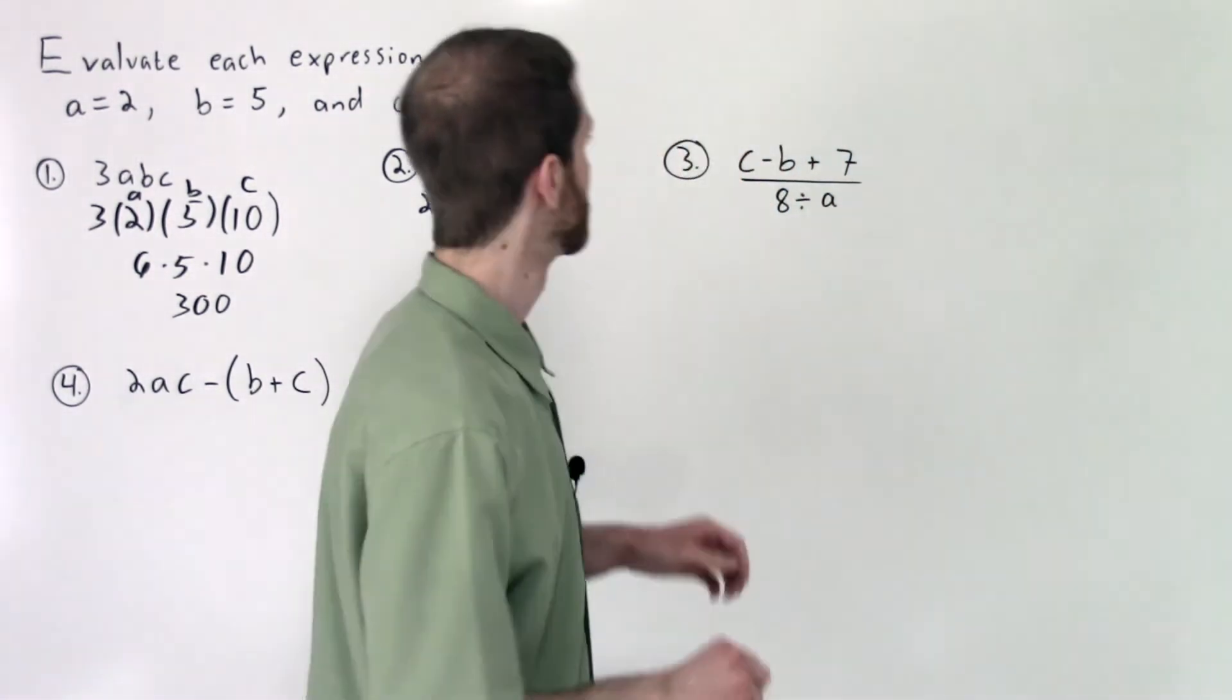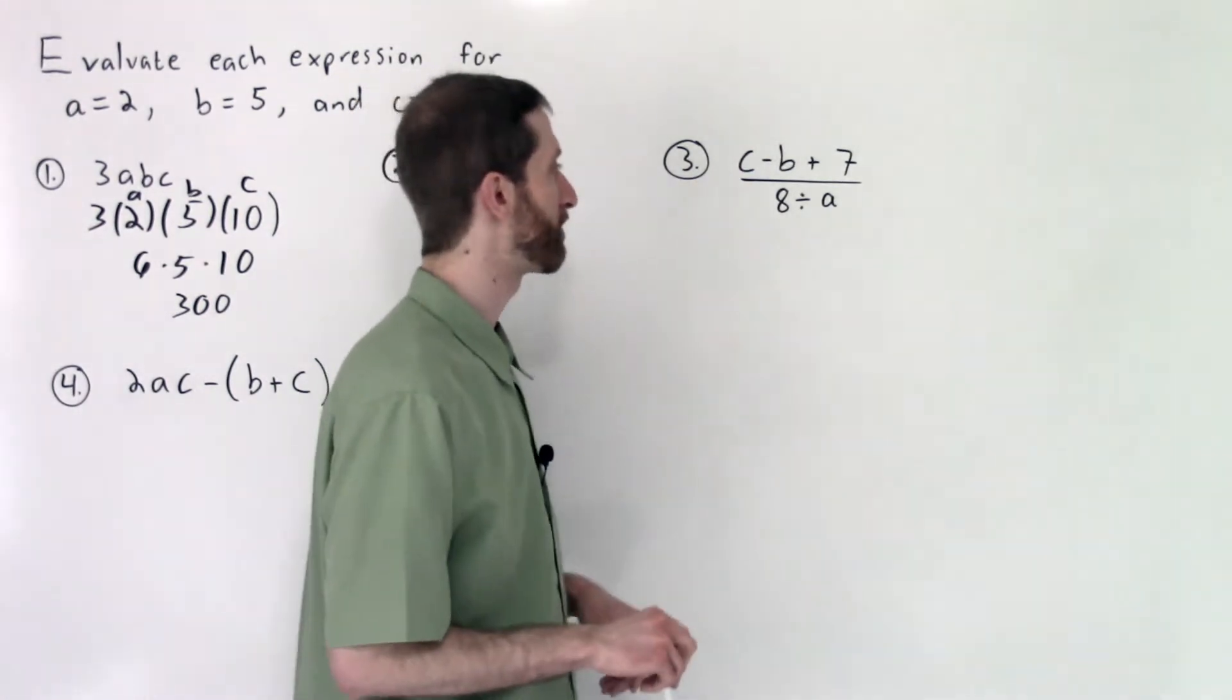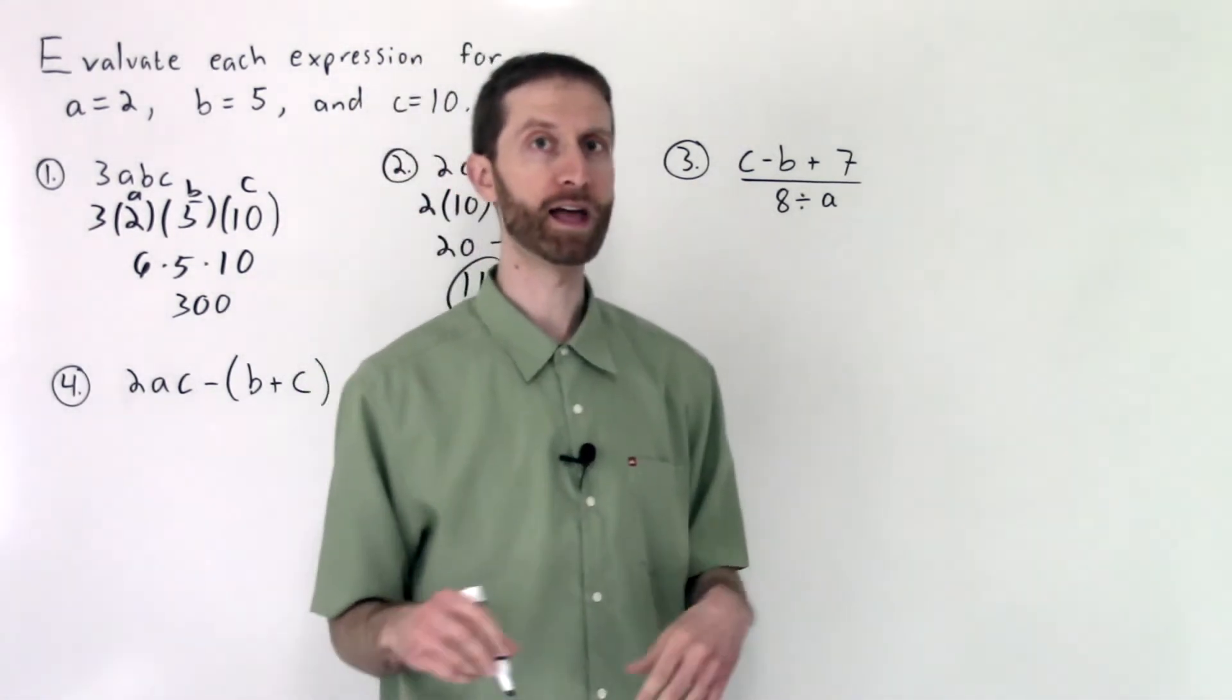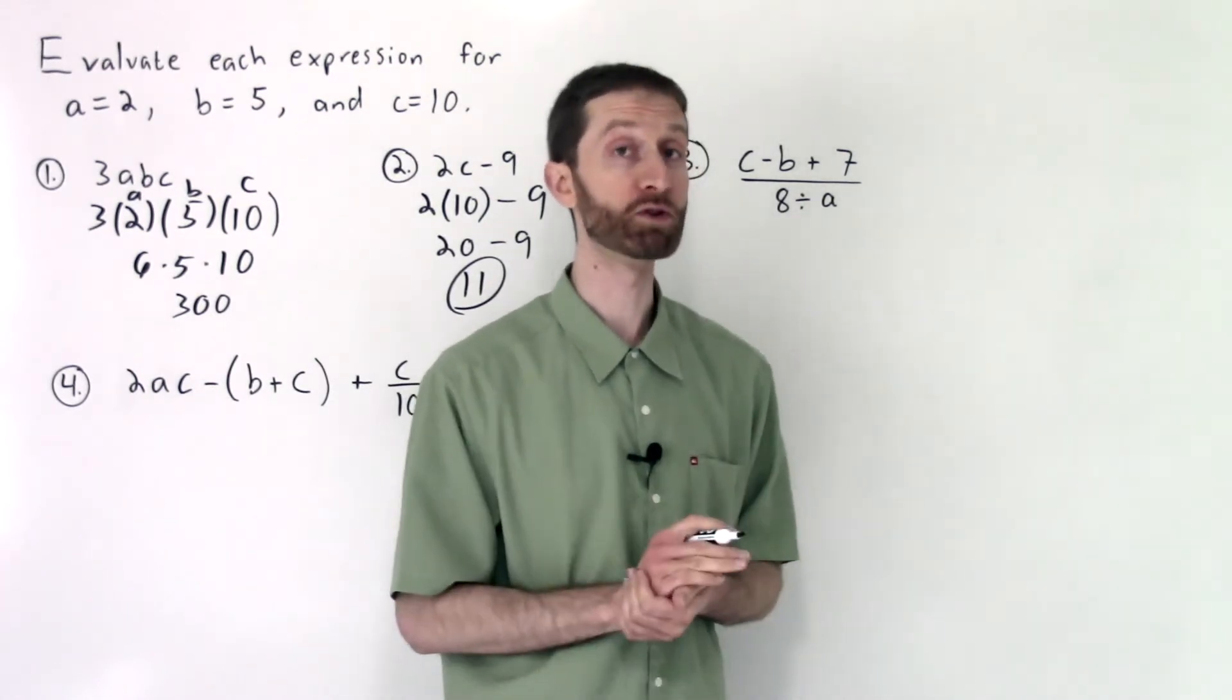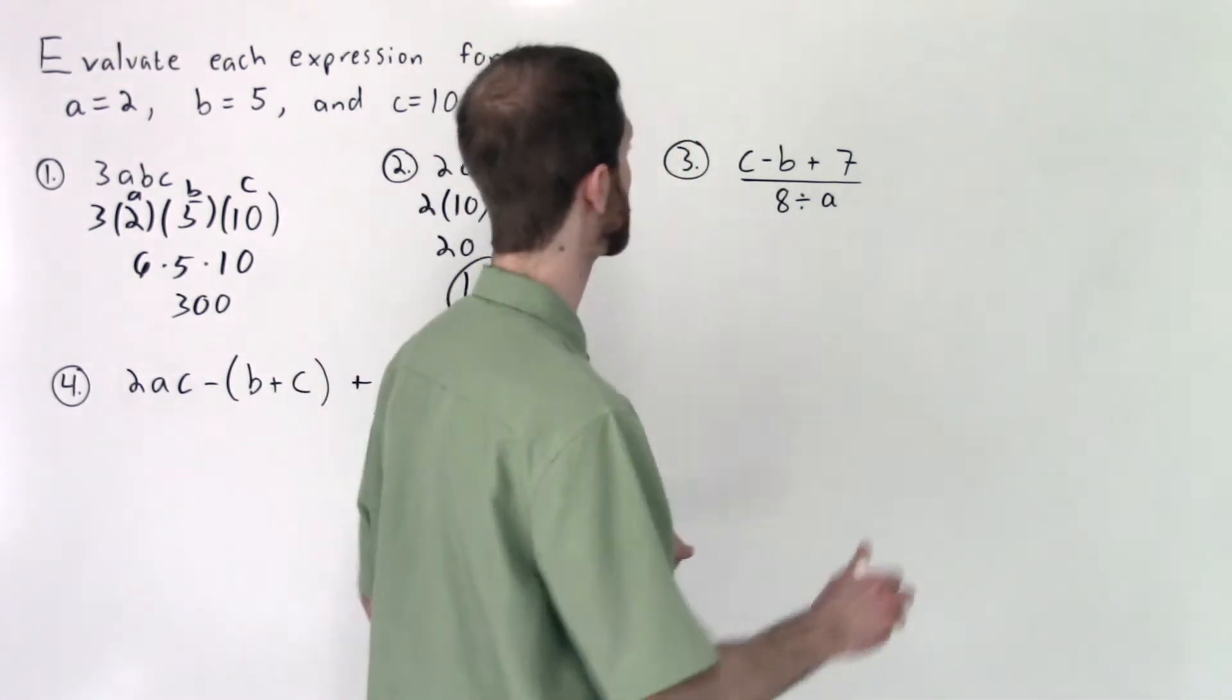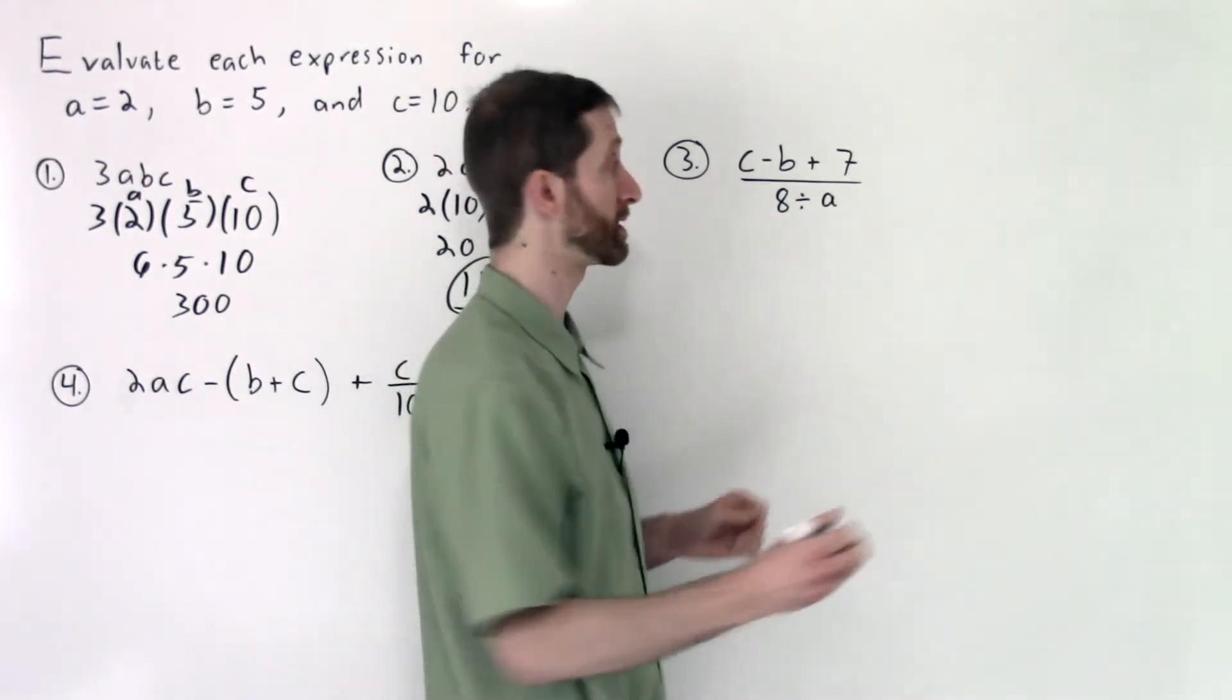Beautiful prime number that it is. C minus B plus 7, all over 8 divided by A. That's a lot. Take it one piece at a time. You can handle it. C is equal to 10, so we're going to replace C with 10.